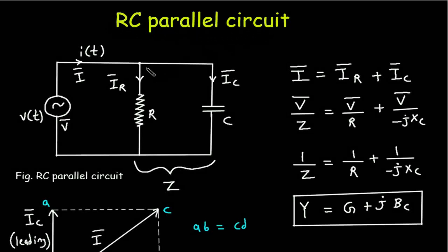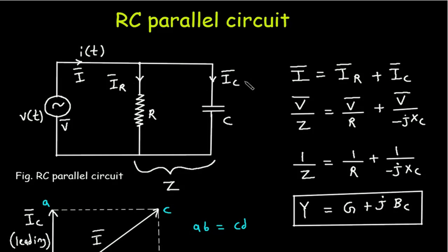This is an RC parallel circuit. Now if we apply KCL at this node, I phasor is equal to IR phasor plus IC phasor. Since this resistor and capacitor are connected in parallel, the voltage across them will be the same. Also, together this resistor and capacitor will have impedance Z.